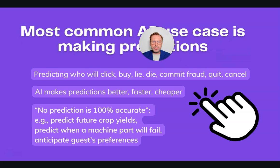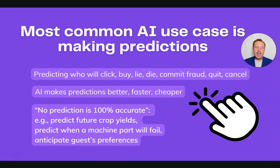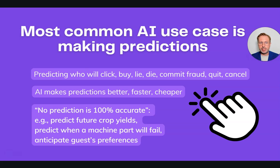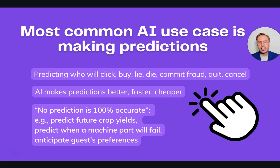The most common use of AI is making predictions. AI is particularly good at predicting who will click, who's going to buy, who's going to lie, who's going to die, who's going to commit fraud, who's going to quit, who's going to cancel their subscription. AI makes predictions better, faster, and cheaper.